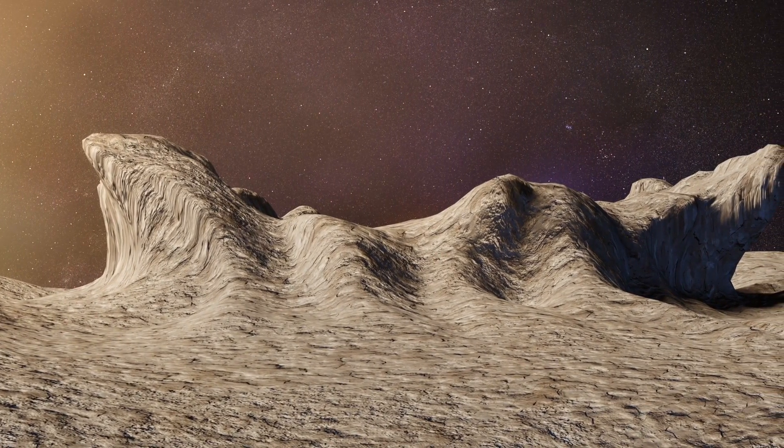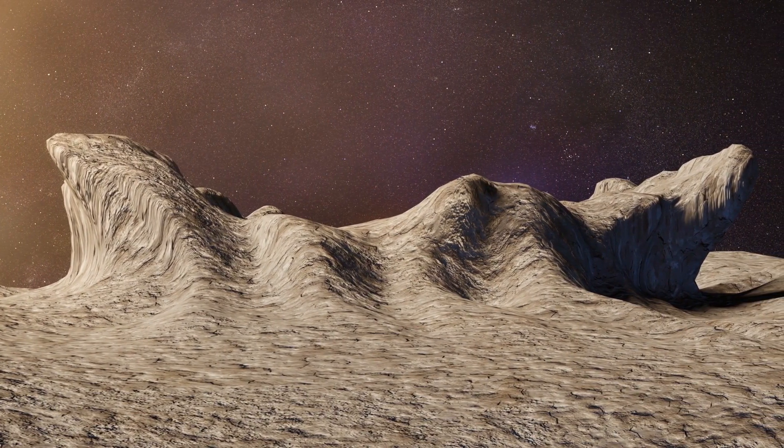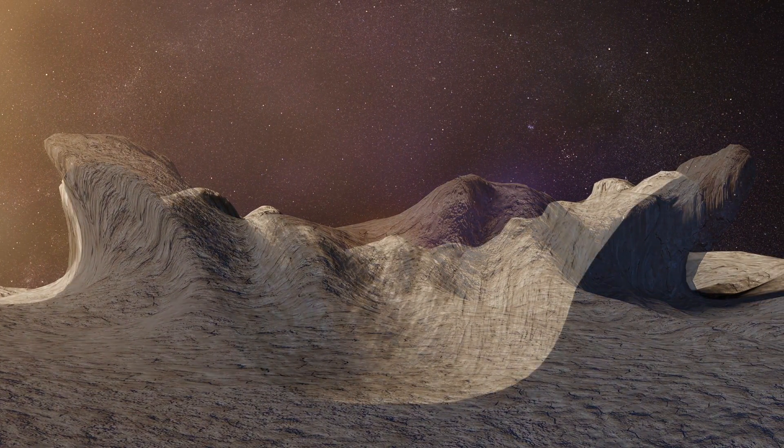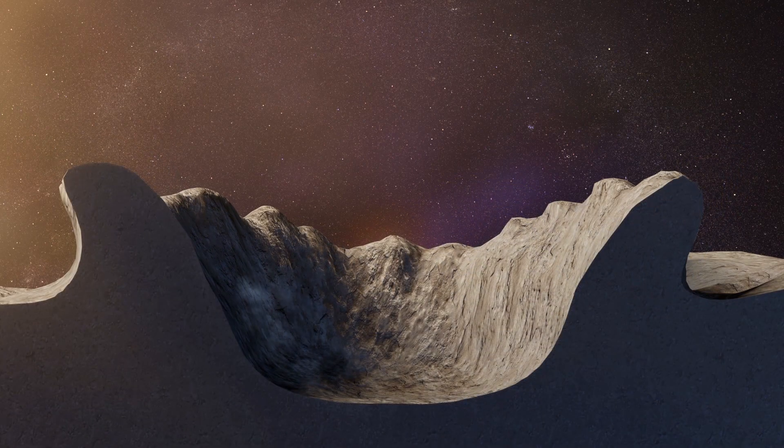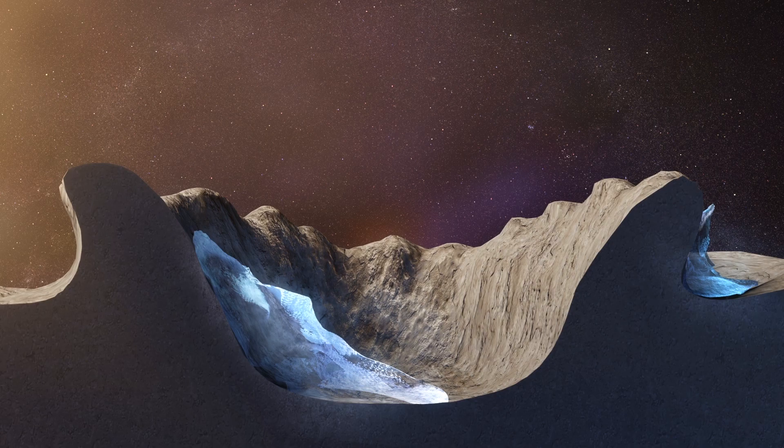While much of Mercury is very hot, the planet lacks an atmosphere to dissipate the heat. According to Space.com, this allows pockets of cold to exist in the shadows of polar craters, which preserve the ice on Mercury.